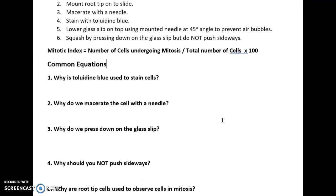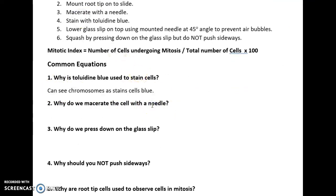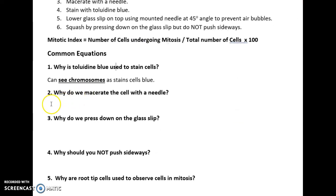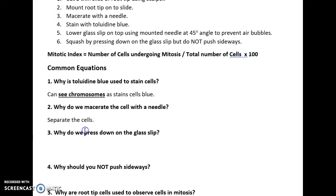Common exam questions on this practical: Number one — why is toluidine blue used to stain cells? That is because without staining you wouldn't be able to see the chromosomes. The key thing is seeing the chromosomes, because that is the context of the question. Number two — why do we macerate the cell with a needle? That is to separate the cells.